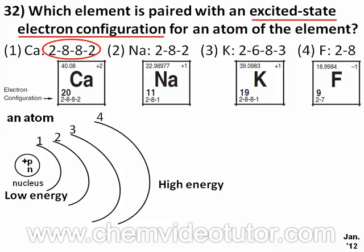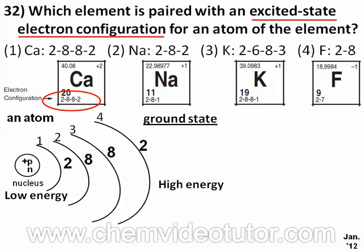Since choice one has calcium having two electrons in the first energy level, eight in the second, eight in the third, and two in the fourth, just like it says in the periodic table, then this is considered to be the ground state for calcium.